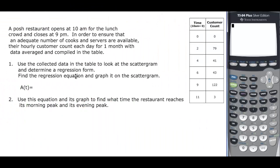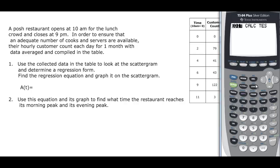The second problem. We have a posh restaurant, opens up at 10, closes at 9, and this is what the customer count is, and all that good stuff. So we need our calculator. Because it says use the collected data to look at the scattergram, and then determine the regression form, and then find it. I've already put all that data in here, but I will show you.